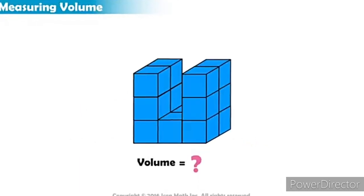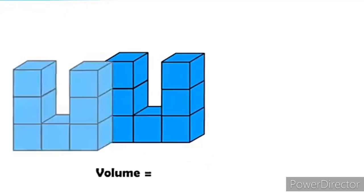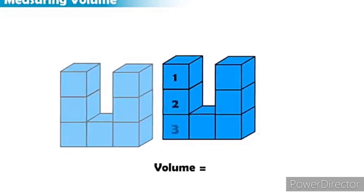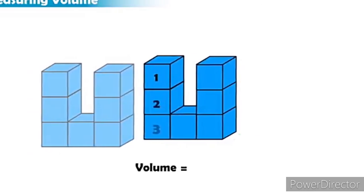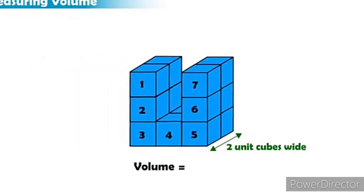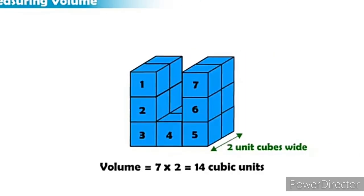In this figure there are 2 parts. First we split the 2 parts, then count the number of cubes in each part. In one part: 1, 2, 3, 4, 5, 6, 7. Therefore the volume is 7 times 2 equals 14 cubic units.